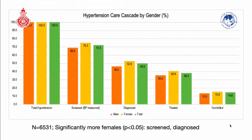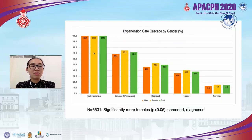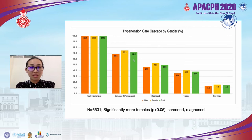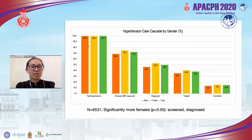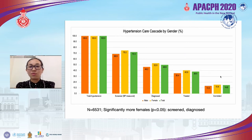Here is our main result: the hypertension care cascade by gender. From 100% total, about 72% were screened, about 50% diagnosed, about 38% treated, and only about 15% had controlled blood pressure — a significant loss at every step. Comparing males and females, females outnumbered males at every step, though the difference was only statistically significant for the screened and diagnosed categories.